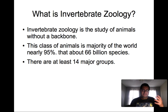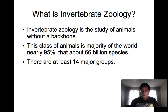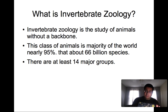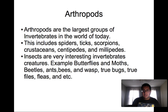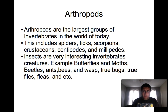This class of animals makes up a majority of the whole world — nearly 95% — and there are at least 66 billion species around the world. There are at least 40 major groups that make up invertebrate animals. For example, we have cuttlefish and scorpions. Arthropods are the largest group of invertebrates in the world today. This includes spiders, ticks, scorpions, crustaceans, centipedes, and millipedes.